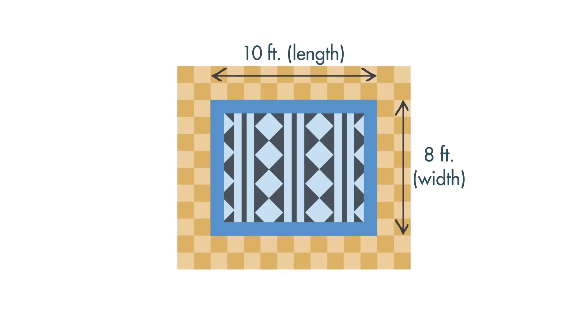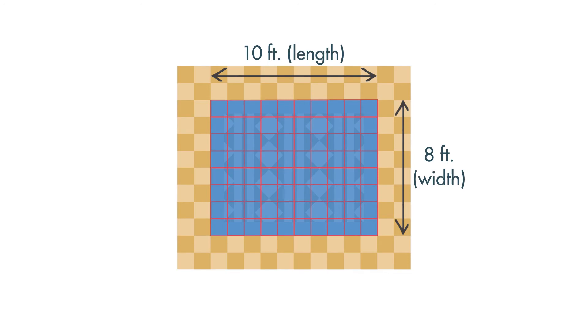To find the area of a square or rectangle, multiply length times width. The length is 10 feet and the width is 8 feet.